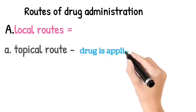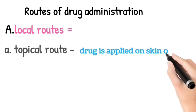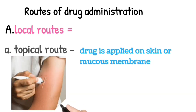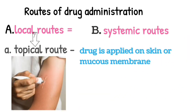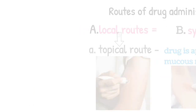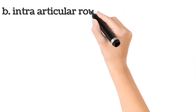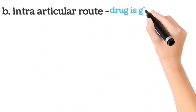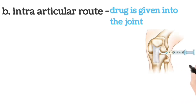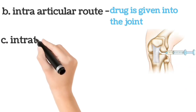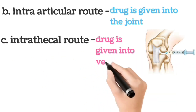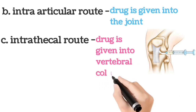In local routes, the first one is the topical route. In this, the drug is applied on skin or mucous membrane. After that, intra-articular route — in this, the drug is given into the joint. And the last one is intrathecal route, where the drug is given into the vertebral column.